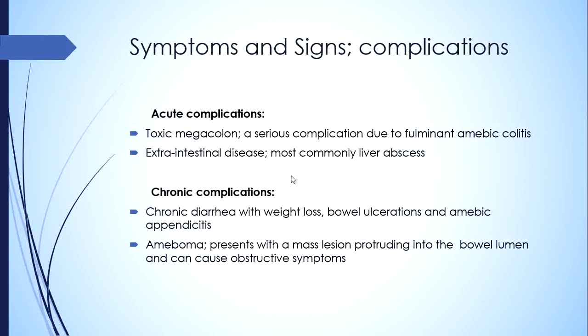Among the acute complications is toxic megacolon, a serious complication occurring in the case of fulminant amoebic colitis. The disease can also present with extra-intestinal disease, most commonly liver abscess. Chronic complications include chronic diarrhea with weight loss, a malabsorption-like picture, extensive bowel ulceration resembling inflammatory bowel disease, amoebic appendicitis, and amoeboma — an inflammatory mass that protrudes into the bowel lumen causing obstructive symptoms.